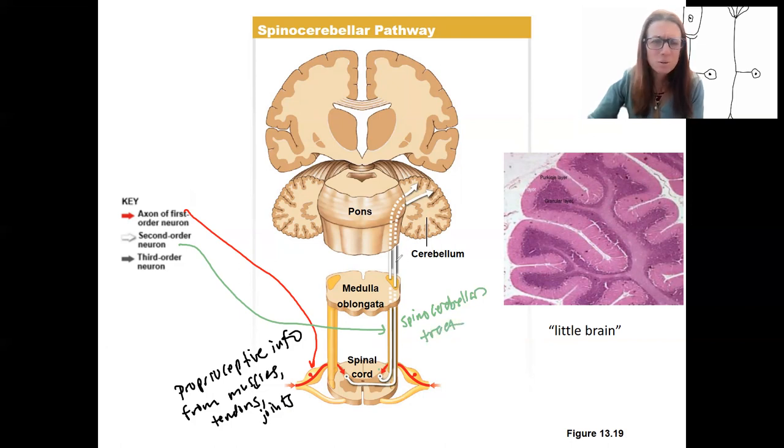Through the medulla, no synapse, up to the cerebellum where there is the synapse. There is no third order neuron in this pathway. So remember, our cerebellum is our little brain. This can help us regulate the body position.